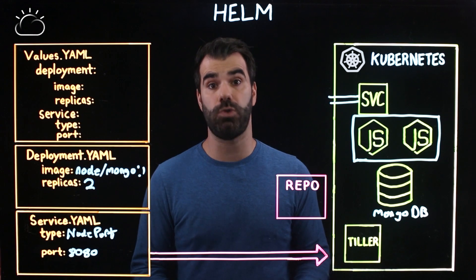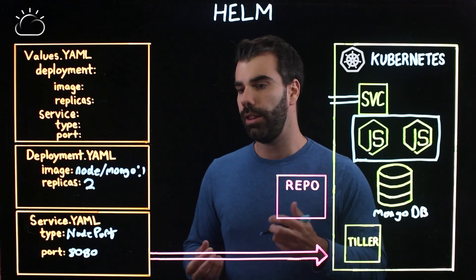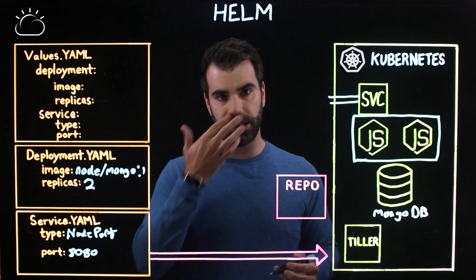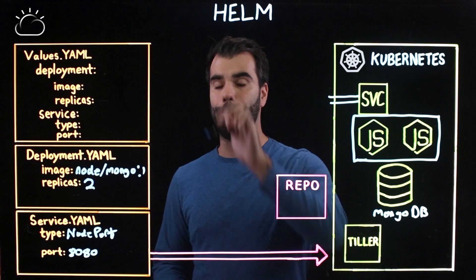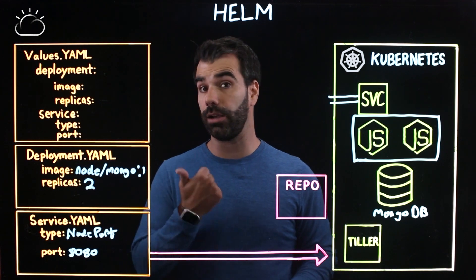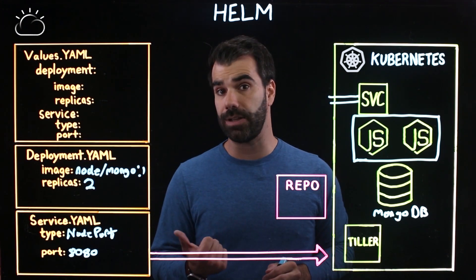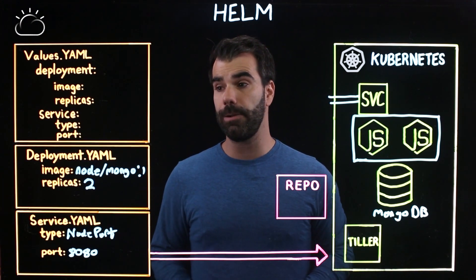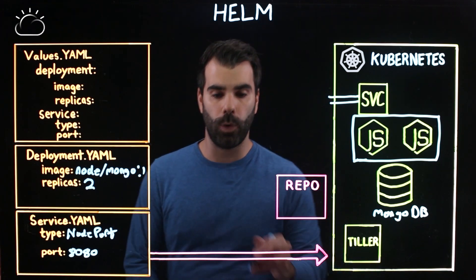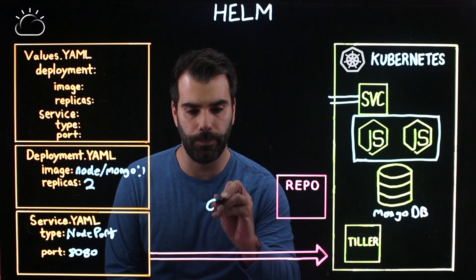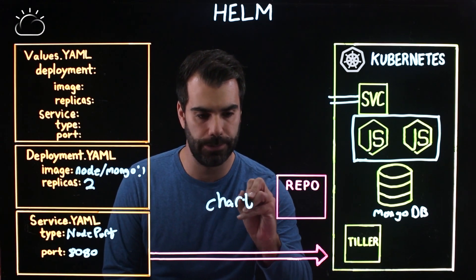What if there was an easier way to manage the configuration for your whole application stack and separate that logically from your templated application? This is one place where Helm can really help you out. Think of Helm as combining two particular components: a configuration, defined by a values.yaml file, and a template — or what we call in Helm, a chart.